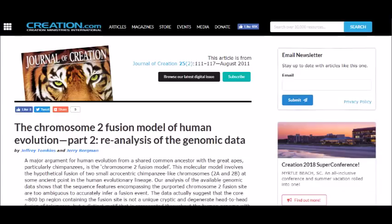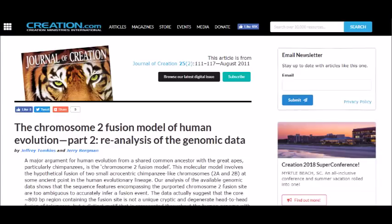As Ruhiff notes, Tompkins' own paper, The Chromosome 2 Fusion Model of Human Evolution Part 2, Reanalysis of the Genomic Data, displays a picture of repeats of the reverse telomeric sequence. Tompkins is attempting to show that the vestigial telomeric regions don't exist.